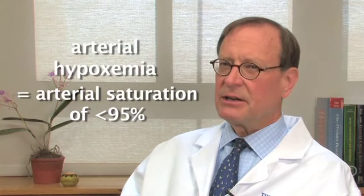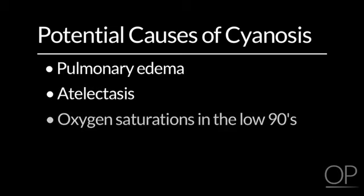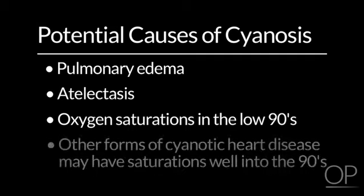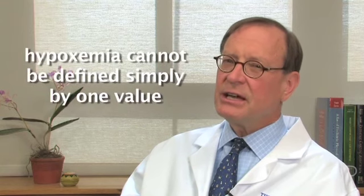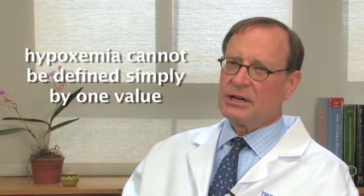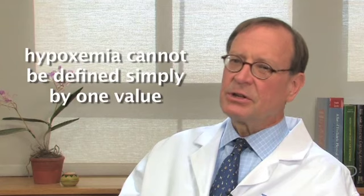Arterial saturation technically of less than about 95% or so defines hypoxemia, but what constitutes hypoxemia is actually pretty variable. There are some normal babies with a little bit of extra lung water or atelectasis that may have low 90 saturations for a period of time that are obviously normal for all practical purposes. On the other hand, there are certain forms of cyanotic heart disease that have a considerable amount of pulmonary blood flow that may actually have saturations well into the 90s.